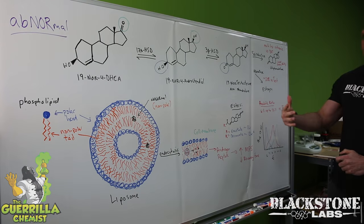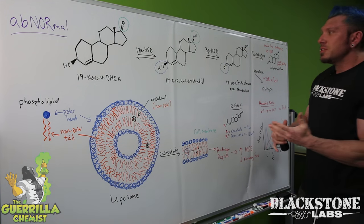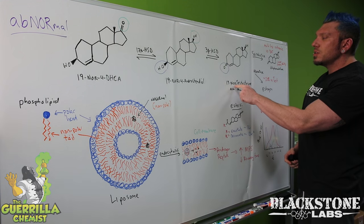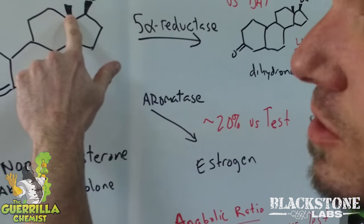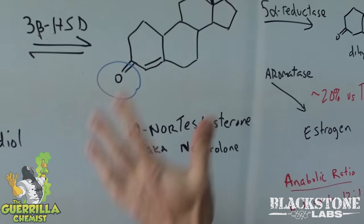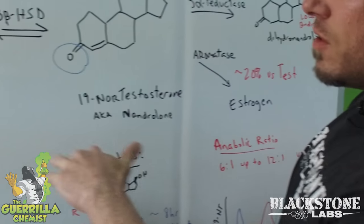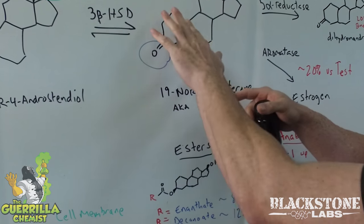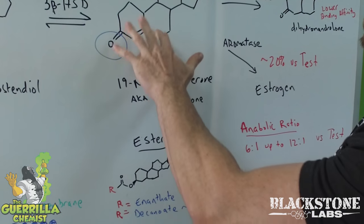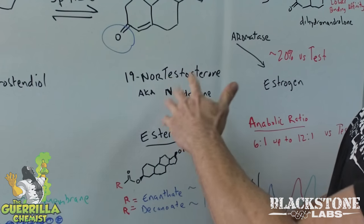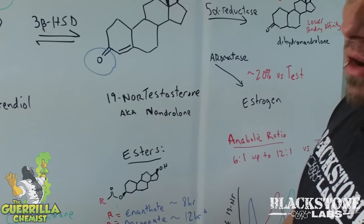One thing I did want to note: 19-nor means that there's a hydrogen here instead of a methyl group. Normally this denotes a methyl group, but there's only a hydrogen here now. What that basically does and why it works so well is it makes this ring structure flatter. When that methyl group is there, it sticks out and doesn't bind as well to the androgen receptor. Being that it's missing, 19-nor derivatives bind much more tightly to the androgen receptor, which is basically why they're more anabolic in nature.